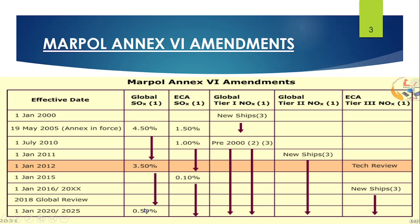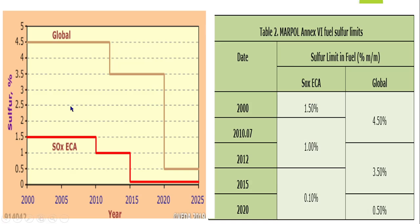These dates are important. In the Emission Control Area, the sulfur cap was 1.5%, which was reduced to 1% on 1st July 2010, followed by a further reduction to 0.1% on 1st January 2015, where it remains today. By graphical diagram you can see: globally we went from 4.5% to 3.5%, then down to 0.5%. In the ECA, we went from 1.5% to 1%, then to 0.1%.